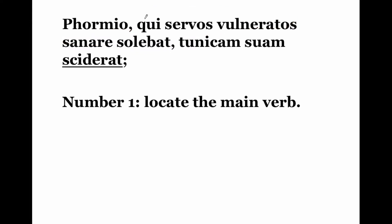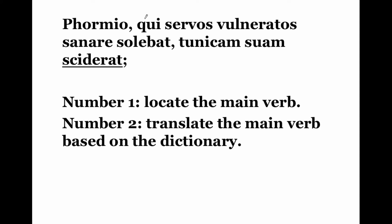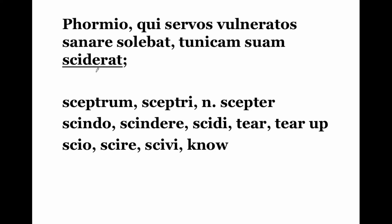The main verb is sciderat. Locate the main verb based on the dictionary. If you go to the dictionary, you look and find — sciderat is not there. But you have to remember, just because the form in your text doesn't seem to be in the dictionary, you have to very commonly run over to the third principal part. This is where you're going to find this root — scid. In the present tense, scindo means 'I tear, I tear up.'